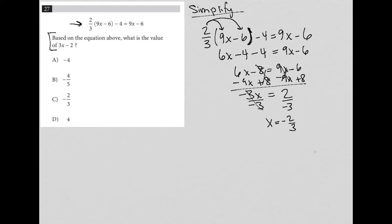So now the question does not ask me for the x value, and you can see how there is a trap answer here. Because negative 2 thirds is equal to x. But the question, if we read it, says based on the equation above, what is the value of 3x minus 2.